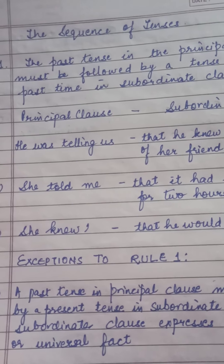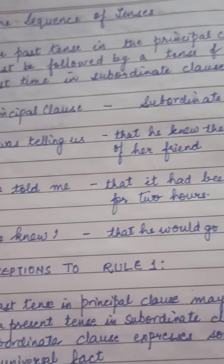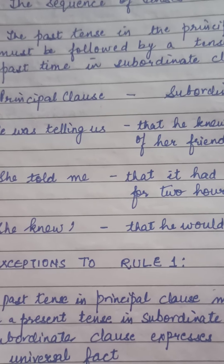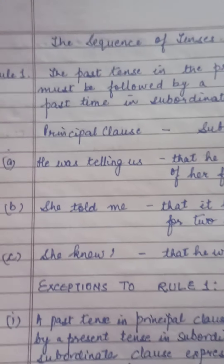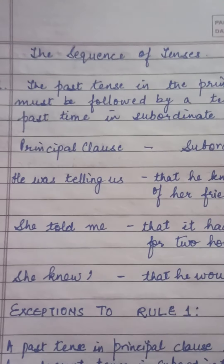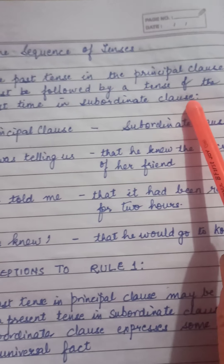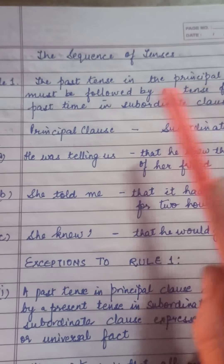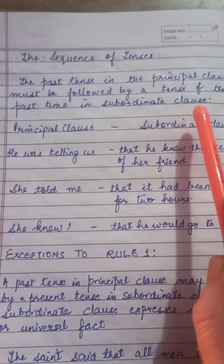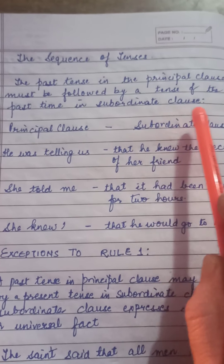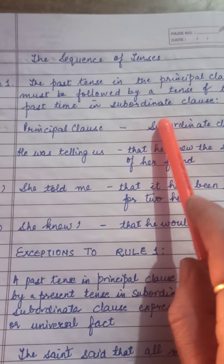There are two main rules governing the sequence of tenses. Rule one: the past tense in the principal clause must be followed by a tense of the past time in the subordinate clause.